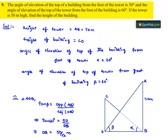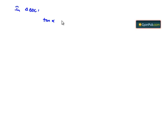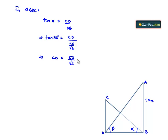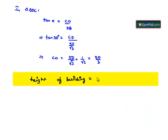Similarly, let us consider triangle BDC. Tan(alpha) equals the opposite side CD divided by the adjacent side DB. So tan(30°) equals CD divided by DB, where DB is 50/√3. This implies CD equals (50/√3) multiplied by tan(30°), which is 1/√3, giving CD equal to 50/3. Therefore, the height of the building is 50/3 meters.